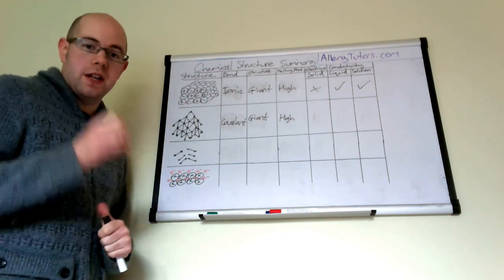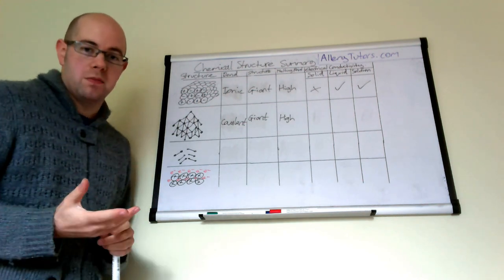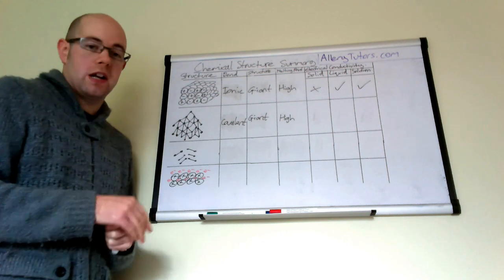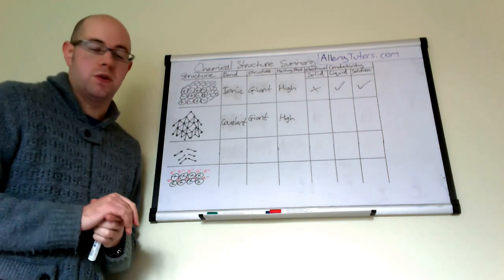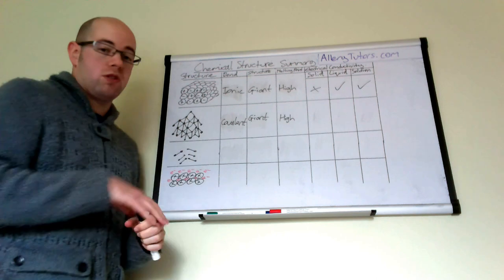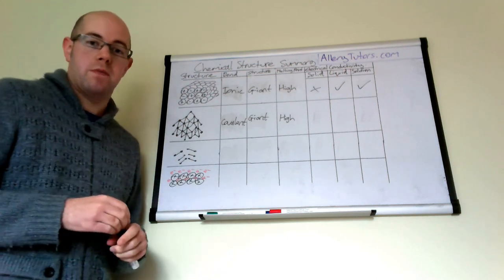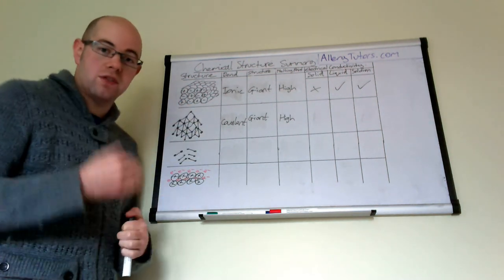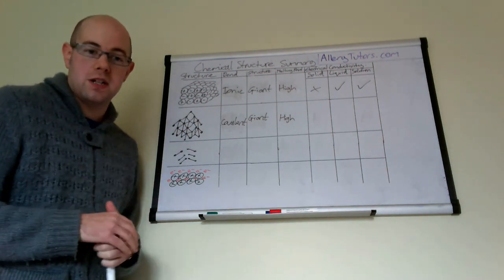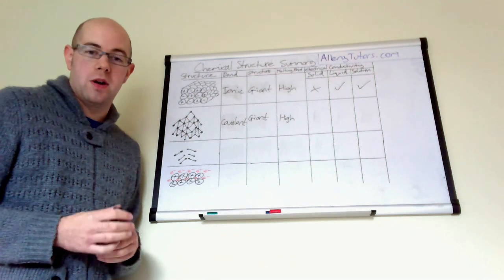If they ask you in the exam why giant covalent structures have a high melting point, that's what you would say. It's the only time you should talk about melting points and bonds, because most of the time you should be talking about intermolecular forces. But when you've got giant structures like this, you are actually trying to break bonds, and that's why these things have such a high melting point.